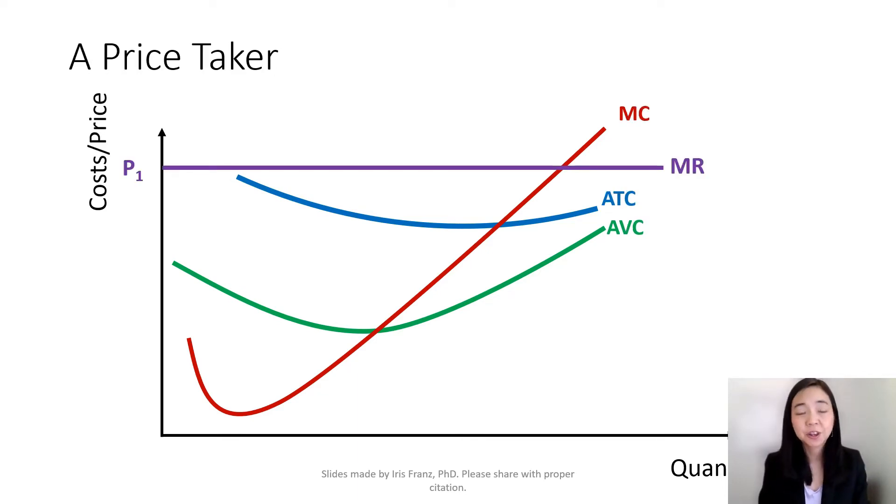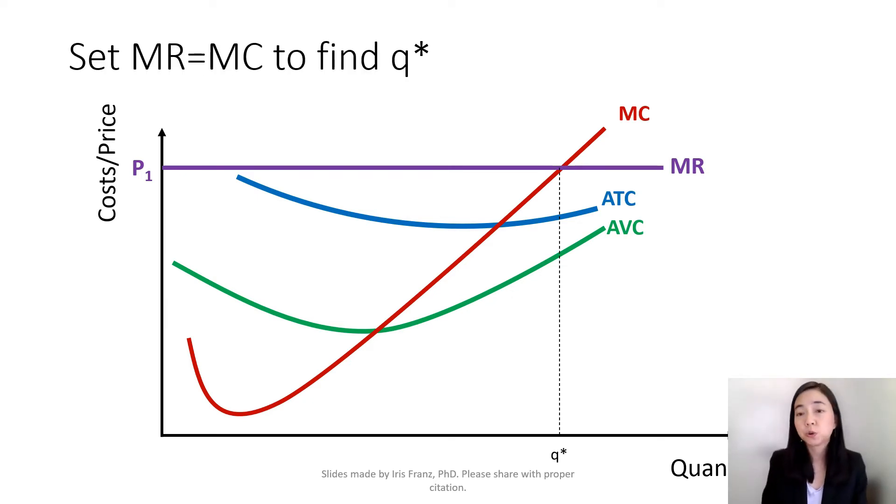Now our firm is a price taker, so we take the market price P1 as given, and P1 is also our marginal revenue curve. Next, we are going to equate marginal revenue equal to marginal cost to find the quantity we are going to produce, Q star.